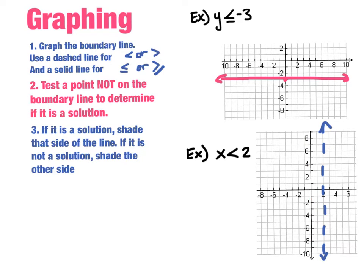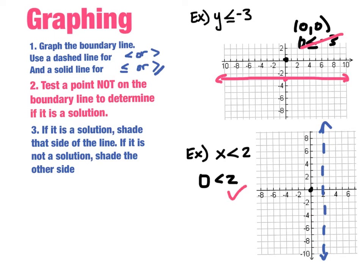The next step is to test a point not on the boundary line to determine if it's a solution. Let's test (0,0) for each. For Y less than or equal to negative 3: the Y value is 0, so is 0 less than or equal to negative 3? No — so (0,0) is not a solution. For X less than 2: the X coordinate is 0, so is 0 less than 2? Yes — so (0,0) is a solution.